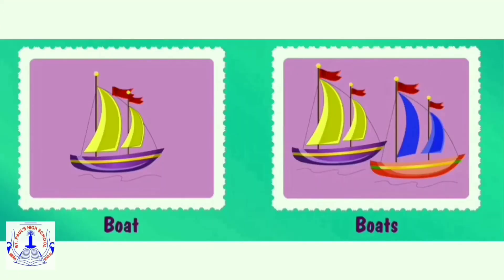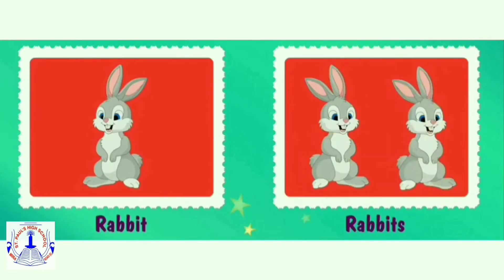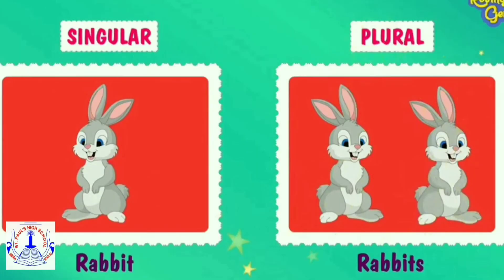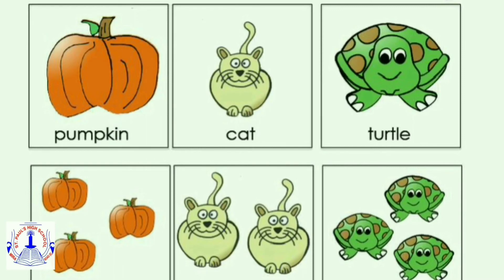B-O-A-T, boat — one boat. B-O-A-T-S, boats — many boats. R-A-B-B-I-T, rabbit — one rabbit. R-A-B-B-I-T-S, rabbits — many rabbits. One pumpkin, many pumpkins. One cat, many cats. One turtle, many turtles.